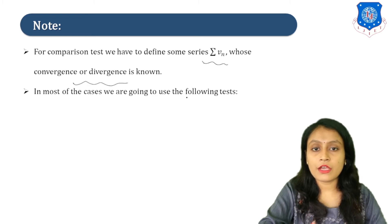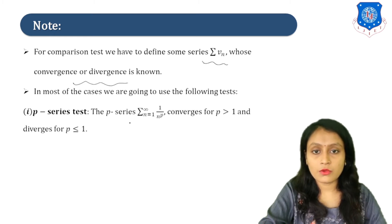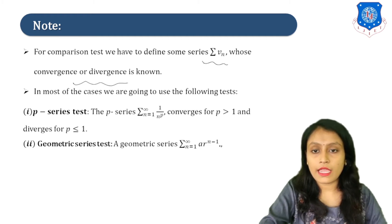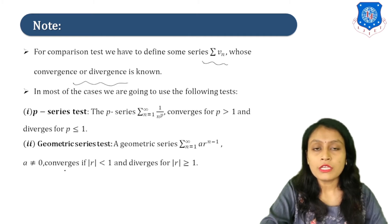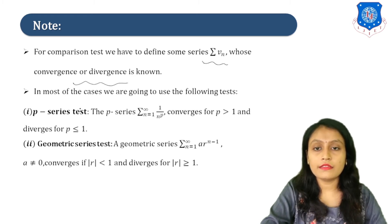For comparison tests, we need to define some series v_n whose convergence or divergence is known. In most cases we use two tests: first, the P-series test — the P-series converges for P greater than 1 and diverges for P less than or equal to 1. Second, the geometric series: a times R raised to (n minus 1), where a is not equal to 0. This series converges if mod R less than 1, and diverges for mod R greater than or equal to 1.